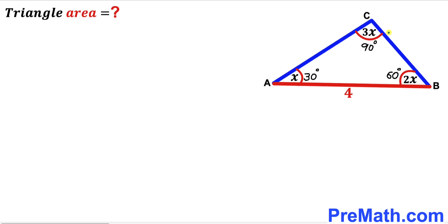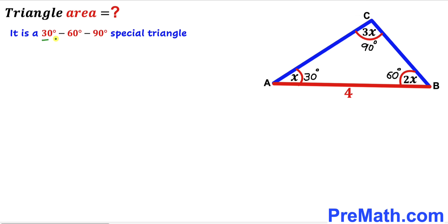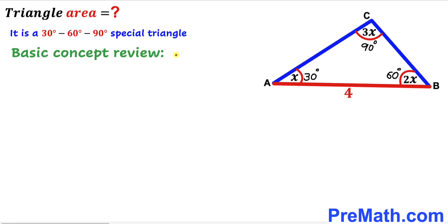We conclude that triangle ABC is a right triangle since angle ACB is 90 degrees. This kind of triangle is called a special 30-60-90 degree triangle, since this angle is 30 degrees, this angle is 60 degrees, and this angle is 90 degrees.